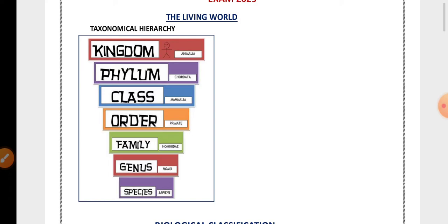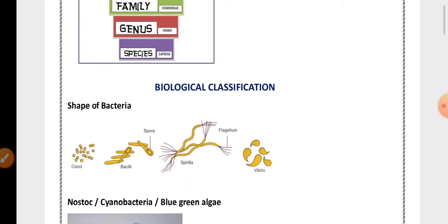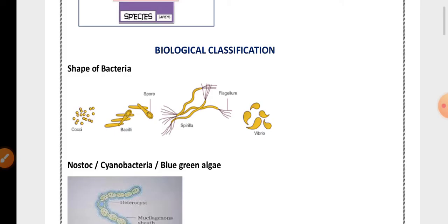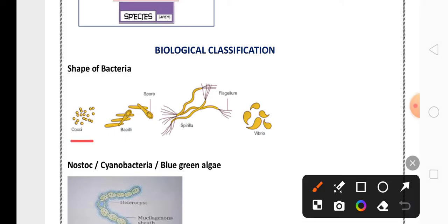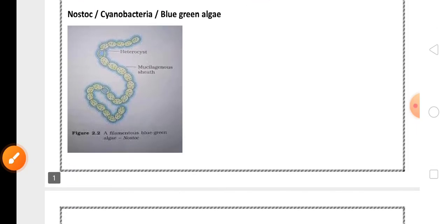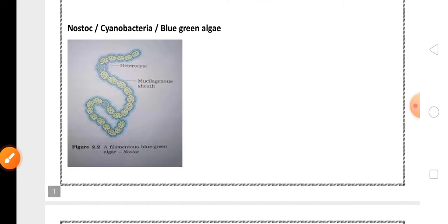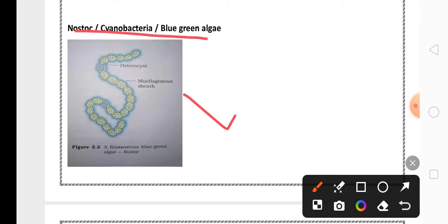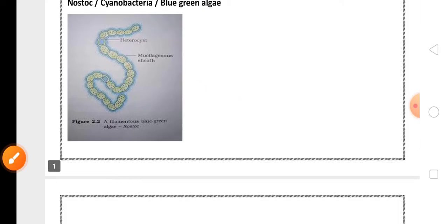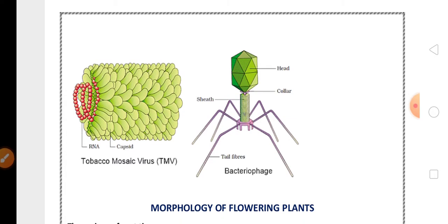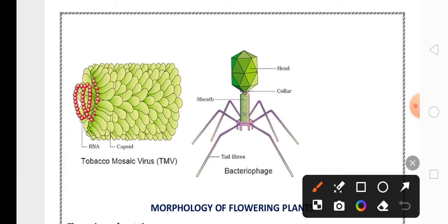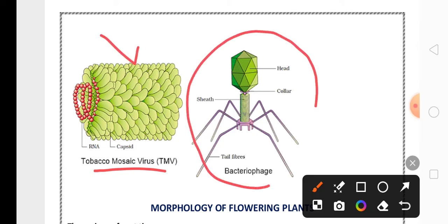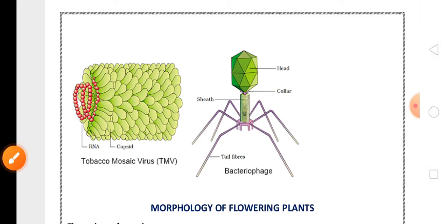The taxonomic hierarchy pathway flowchart is very important for two marks. In Biological Classification, the shapes of bacteria — cocci, bacilli, spirilla, and vibrio — are also important for two marks. The diagram of Nostoc cyanobacteria, or blue-green algae, is important from the Biological Classification chapter. Also, the tobacco mosaic virus diagram and bacteriophage diagram are very very important — any one of these is a compulsory question for the exam.